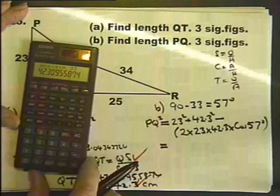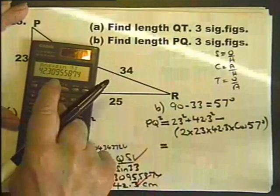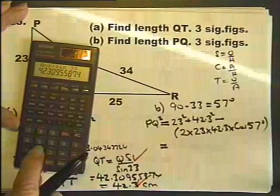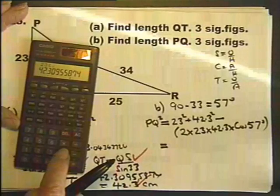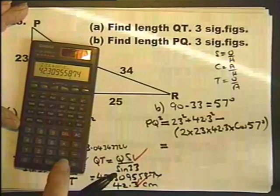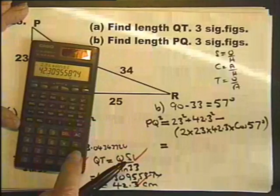I can use that full value because it's still on the window of the calculator. But the examiner would be quite happy if I used that answer because it's what I was asked to do in part A. So it doesn't matter whether you use 42.3 or the full calculator answer. So I'm going to use the full calculator answer anyway. 23 squared